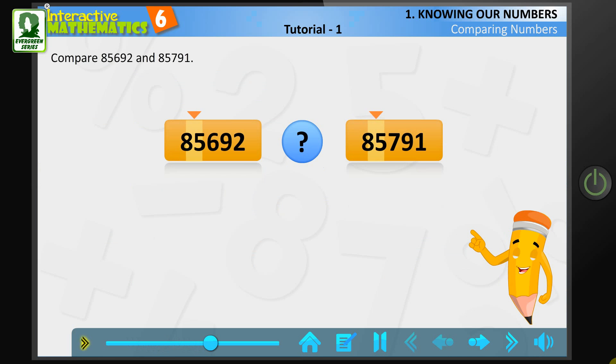then compare the digits at the next place. If again the digits are same, then move on to the next digit from left. Since 6 is smaller than 7, 85,692 is smaller than 85,791.